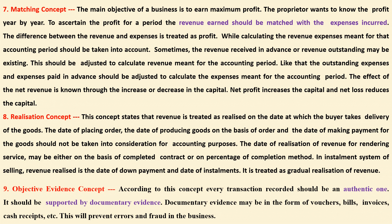The seventh one is matching concept. The main objective of business is to earn maximum profit. The proprietor or owners want to know the profit year by year. To ascertain the profit for a period, the revenue earned should be matched with the expenses incurred. The difference between revenue and expenses is treated as profit. While calculating the revenue, expenses meant for that accounting period should be taken into account. Revenue received in advance or outstanding revenue should be adjusted to calculate the revenue meant for the accounting period only.